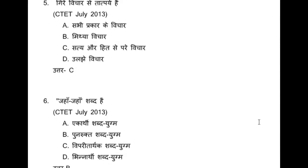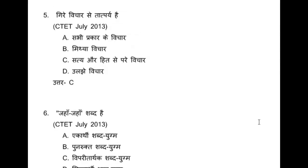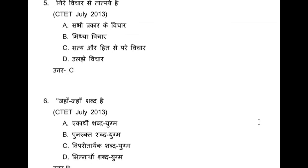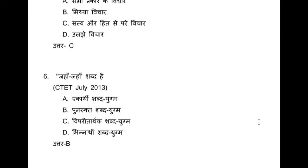The next question: jhaan jhaan shabd hai — it is which type? Ekarthi shabd yugma / punarukta shabd yugma / viparit arthak shabd yugma / ya bhinnarthi shabd yugma? We saw in the previous passage the punarukta yugta shabd — like 'dure dure' and 'oonchi oonchi'. Here also 'jhaan jhaan' is punarukta because it is the same word — viparit arthak, bhinnarthi, and ekarthi are not possible. So you now understand what punarukta shabd are. Looking at this paper, you can realize that grammar-related questions are asked more — like punarukta shabd — in both the 2012 and 2013 papers.